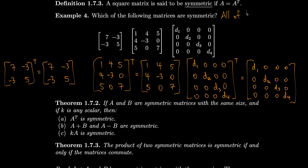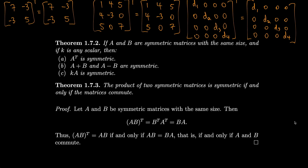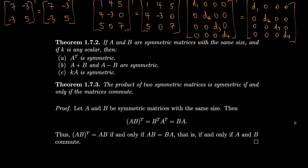If A and B are symmetric matrices of the same size and k is any scalar, then the transpose of A is symmetric, A plus B and A minus B are symmetric, and kA is symmetric. If A is symmetric, its transpose equals A — that's the whole point.